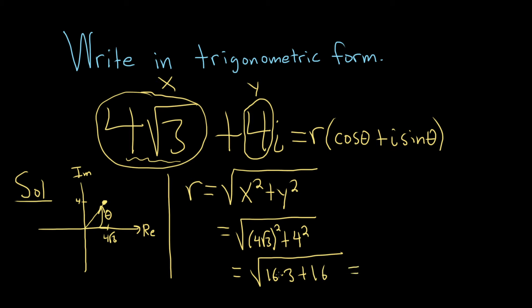It's equal to, 16 times 3 is 48, so we get 48 plus 16. So we get the square root of 64, so that's 8. Okay, so that's 8. So our r in this problem is 8.